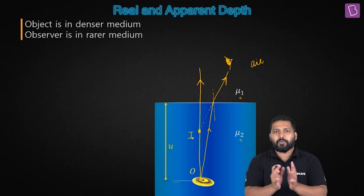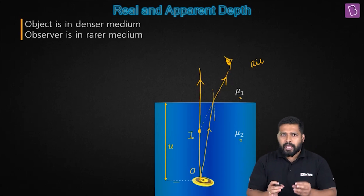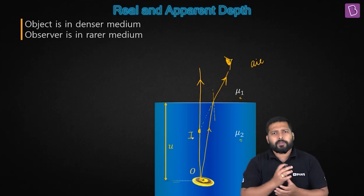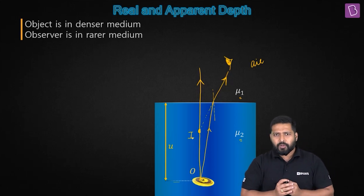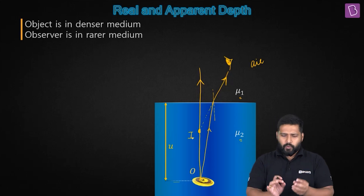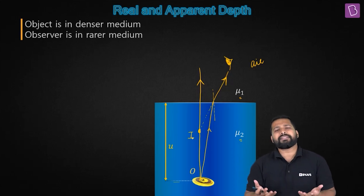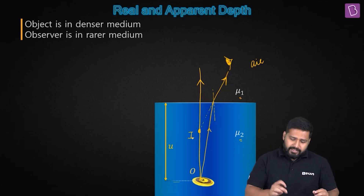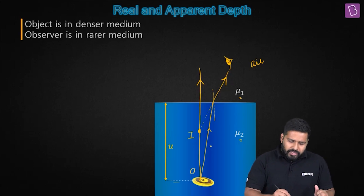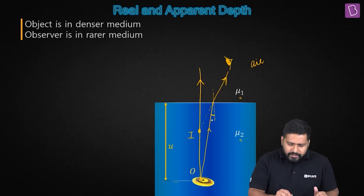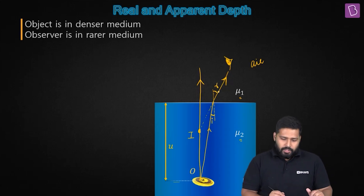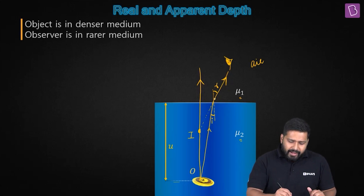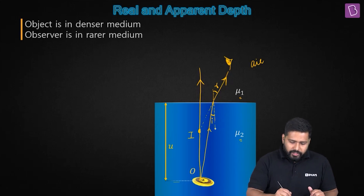The coin actually appears to be raised. So we had a coin, we dropped it in water, and we want to see it from above. The coin is going to sink to the bottom. I took two rays: one is the normal incidence — it's not going to be deviated at all — and the second is a general ray. This general ray has an angle of incidence and an angle of refraction.